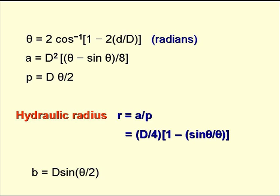So the angle of flow θ is 2cos⁻¹(1 - 2d/D) in radians. The area of flow is D²(θ - sin θ)/8, and the wetted perimeter is Dθ/2.